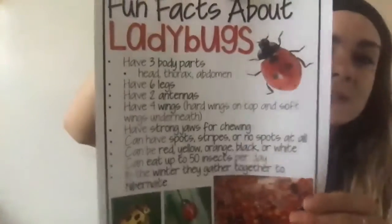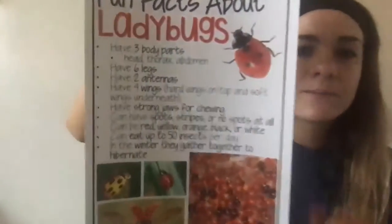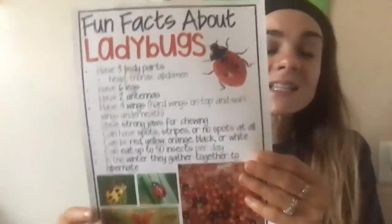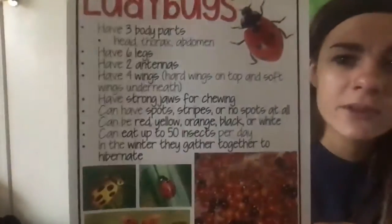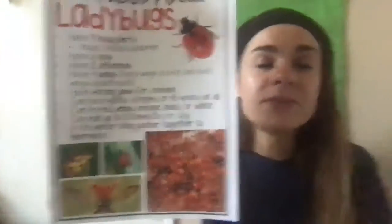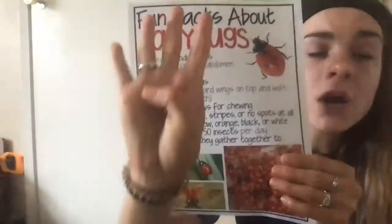Now we're going to go over some fun facts about ladybugs. Just like the ant, they have three body parts: the head, thorax, and abdomen. They have six legs — can you show me six with your fingers? And they have two antennas at the top of their head. Ladybugs have something different than ants — what can ladybugs do that ants cannot? Ants crawl, but ladybugs can fly! And what do they need in order to fly? They need wings. A ladybug has four wings.